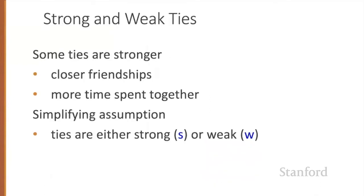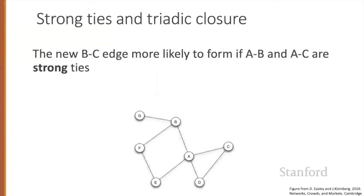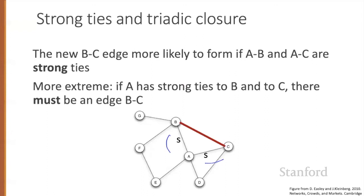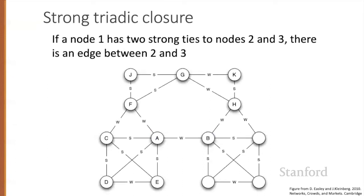Let's enrich our model further. Some ties are stronger than others — we have closer friends compared with acquaintances, people we spend more time with. We label every edge with S for a strong tie and W for a weak tie. A new edge like BC is more likely to form if AB and AC are strong ties. An extreme version of this rule is strong triadic closure: if a node has strong ties to two other nodes, there must be an edge between those two nodes.